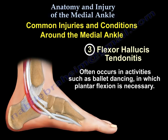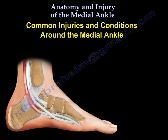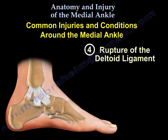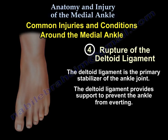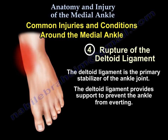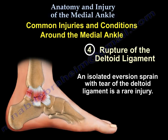This condition often occurs in activities such as ballet dancing, in which plantar flexion is necessary. The final medial ankle condition is rupture of the deltoid ligament. The deltoid ligament is the primary stabilizer of the ankle joint and provides support to prevent the ankle from everting. An isolated eversion sprain with tear of the deltoid ligament is a rare injury.